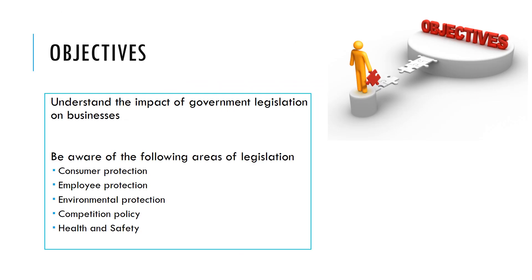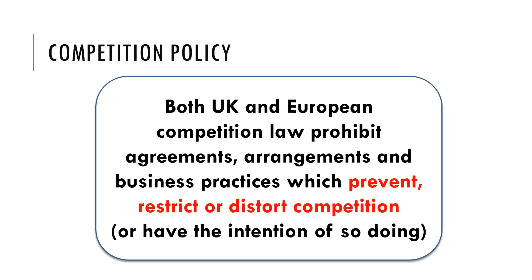So we've looked at consumer protection, employee protection, and environmental protection. We're now going to move on to competition policy, which can affect businesses quite significantly. Both UK and European competition law prohibit agreements, arrangements, and business practices which prevent, restrict, or distort competition — or have the intention of doing so. An example would be price fixing.